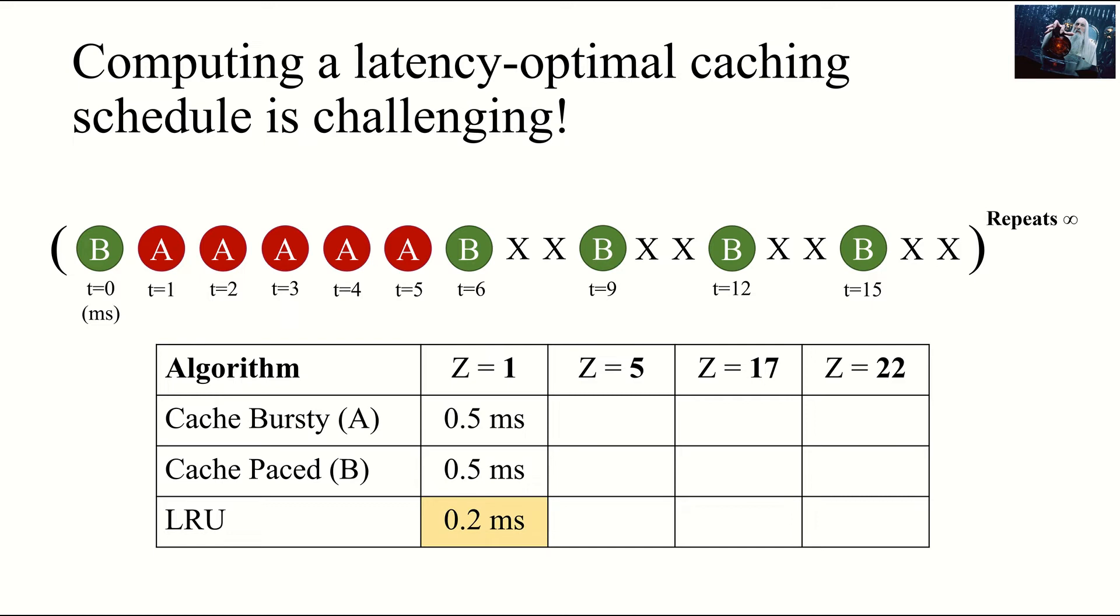It turns out that for Z equals 1, LRU is provably optimal, and yields an average latency of 0.2 milliseconds. For Z equals 5, caching the paced object B yields the lowest latency. For Z equals 17, our decision changes again. And yet again for Z equals 22. So we find that the optimal caching strategy highly depends on the value of Z, and even an educated guess, such as always cache the bursty flow, doesn't generally work.